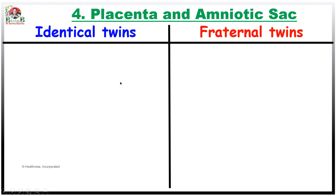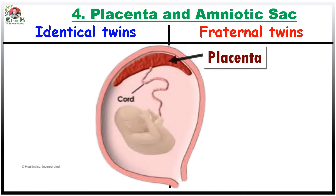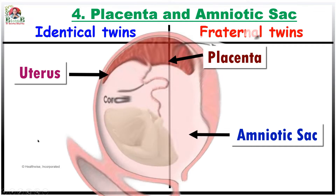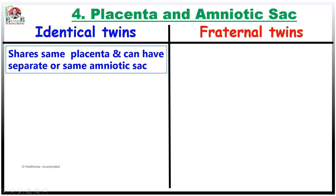The next comparative account is about placenta and amniotic sac. The placenta is a temporary organ that develops in pregnant women. It attaches to the endometrium of the uterus and supplies oxygen and nutrients through the umbilical cord to the developing embryo. The amniotic sac is a pouch-like or bag-like sac that surrounds the developing fetus during pregnancy. Identical twins share the same placenta, but they can have separate or the same amniotic sac.